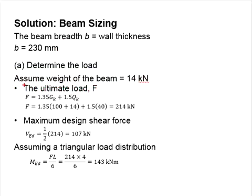The ultimate load is calculated by multiplying the factor of safety of GK and QK of 1.35 and 1.5. The 14 kN is considered as a permanent variable. Therefore, the permanent variable will be 100 kN plus 14.